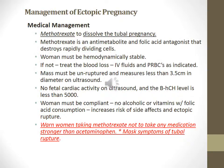Ectopic pregnancy can be treated with methotrexate to dissolve the tubal pregnancy. Methotrexate is an anti-metabolite and folic acid antagonist that destroys rapidly dividing cells. The woman must be hemodynamically stable. If not, treat blood loss with IV fluids and packed red blood cells if indicated. The mass must be unruptured and measure less than 3.5 centimeters in diameter on ultrasound, with no fetal cardiac activity and a beta-hCG level less than 5,000. The woman must be compliant — no alcohol or vitamins with folic acid, as these increase the risk of side effects and ectopic rupture. Warn the woman not to take any medication stronger than acetaminophen, as it can mask symptoms of tubal rupture.